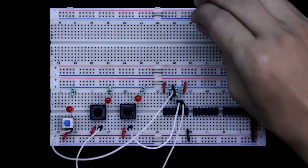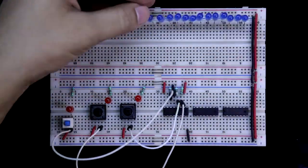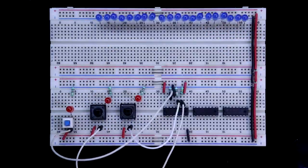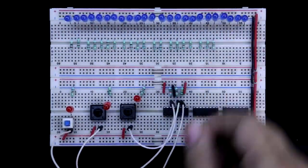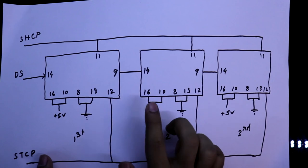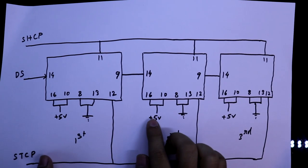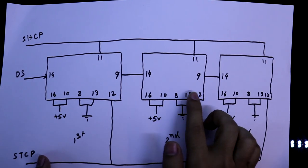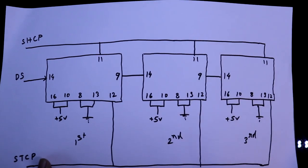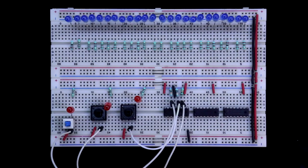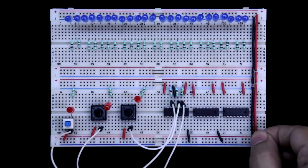Now I am putting 24 LEDs. This is the negative pin of the LED is connected to the negative rail. Now resistor. See here, we have to connect pin number 16 and 10 to the positive rail. And pin number 8 and 13 to the negative rail. Here it is 10 and 16, 8 and 13.